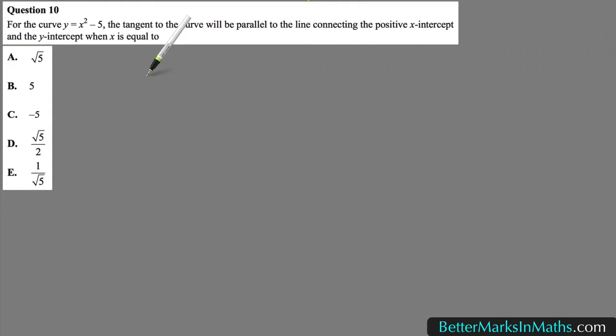For the curve, it pays with this kind of question to actually draw a sketch of the situation. So x squared minus 5, that's your basic x-squared parabola, moved down 5.